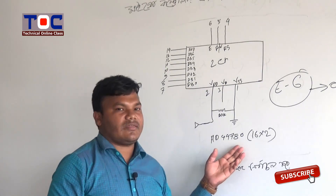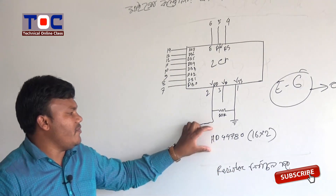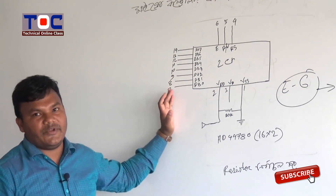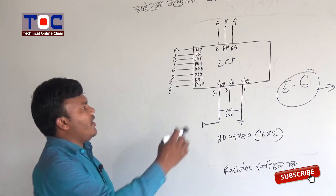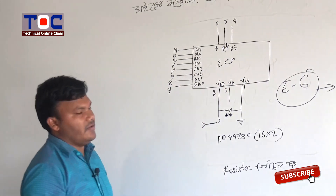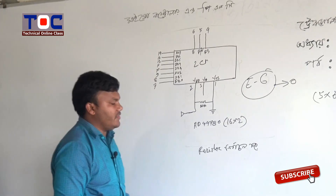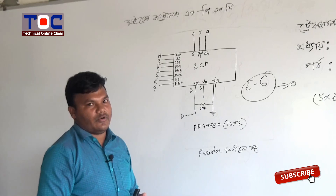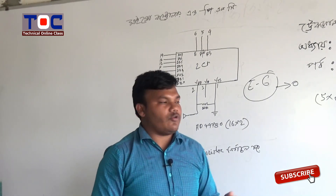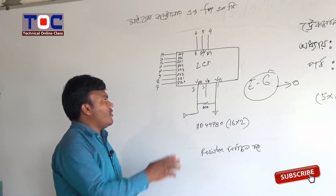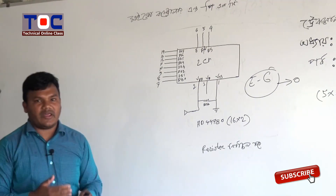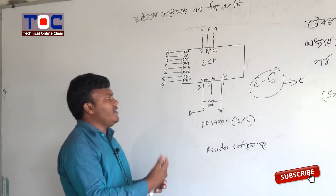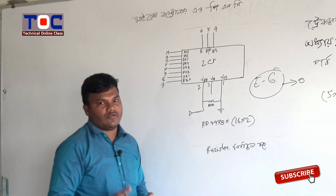If you can use the internet, we can use this display. This display has 14 pins. The pin diagram of the pin — we can select the LCD and select the LCD. We can select the program from the LCD and see the structure of the LCD. What are the functions of the LCD? What are the functions of VCC and VDD?